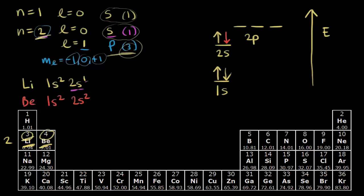Moving on to the next element, boron, which has five electrons. The electron configuration for boron so far is one s two, two s two — but that only accounts for four electrons. The fifth electron goes into the next available orbital, a two p orbital, so we write two p one. The full electron configuration for boron is one s two, two s two, two p one.